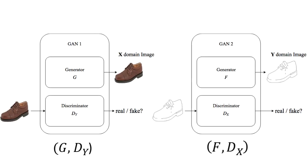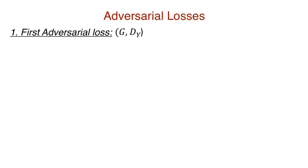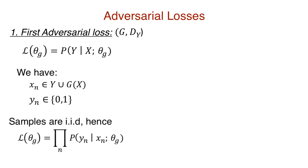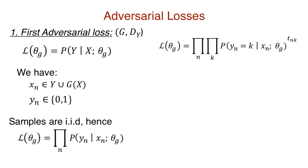Now that we have some notation, let's start deriving the adversarial losses. We have two GANs, so two adversarial losses to compute. First, consider the G-D-Y pair. For the discriminator, each input sample has to be classified as either real or generated. We'll model the parameters of the GAN, theta G, that maximizes its performance using maximum likelihood estimation. Each sample comes from either the original output space Y — in which case the label is real — or from the generated space G, in which case the label is fake. Each sample is assumed to be independently and identically distributed (IID), so we can write it as a product of probabilities, further broken down into K classifications.